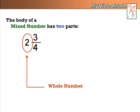First of all, a whole number part. And second of all, a fraction. Together with the whole number and the fraction is called a mixed number.